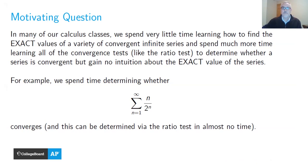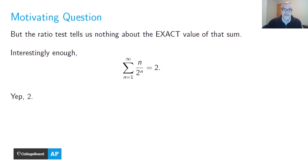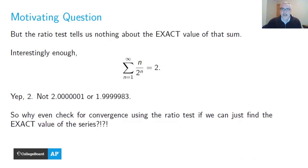Unfortunately, the ratio test doesn't tell you anything about the exact value. Interestingly enough, that sum Σ n/2^n is exactly 2. Not 2.000001, not 1.99999983 — exactly 2. And if you know the series equals this finite value of 2, the question of whether it converges is unnecessary, because knowing it equals 2 implies convergence. So why wouldn't we learn how to find exact values rather than just using convergence tests?